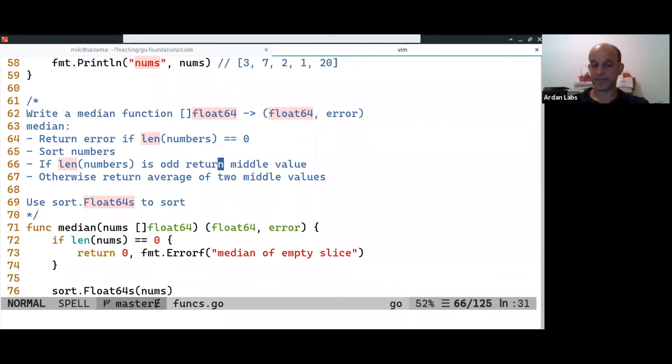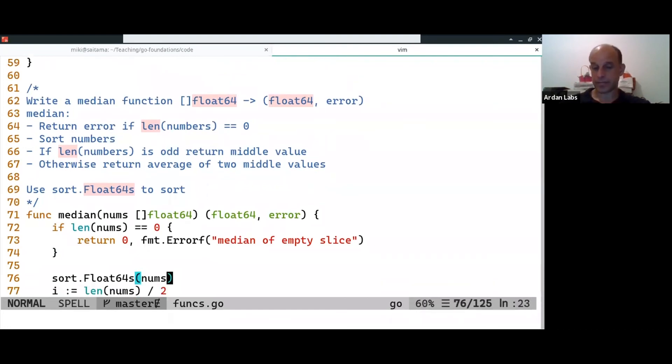And even though, as we said, the slice itself is being passed by value, the underlying array or the underlying memory is the same for the nums in the main and the parameter that is being passed to the function.